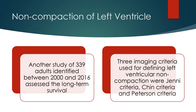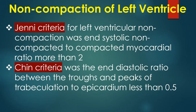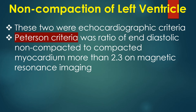Another study of 339 adults identified between 2000 and 2016 assessed long-term survival using three imaging criteria for defining left ventricular noncompaction: the Jenni criteria, the Chin criteria, and the Peterson criteria. The Jenni criteria is a systolic noncompacted-to-compacted myocardial ratio greater than 2. The Chin criteria is the end-diastolic ratio between the troughs and peaks of trabeculation to epicardium less than 0.5. These two were echocardiographic criteria. The Peterson criteria is a ratio of end-diastolic noncompacted to compacted myocardium greater than 2.3 on magnetic resonance imaging.